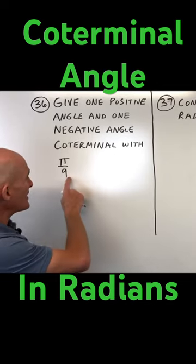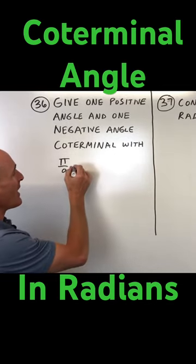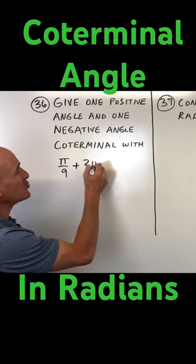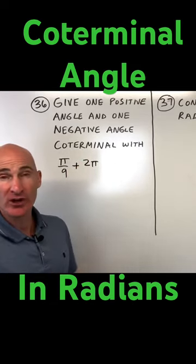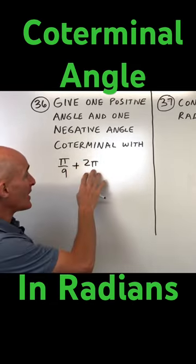But when you're in radians, like in this case here, pi over 9, what we have to do is we have to add 2 pi, which is equal to 360 degrees, but in radians.